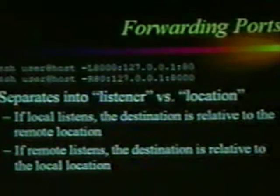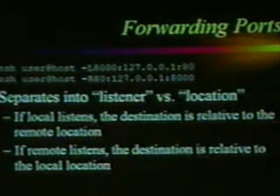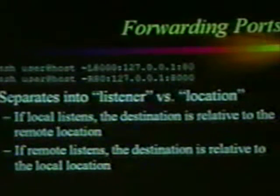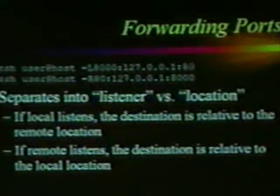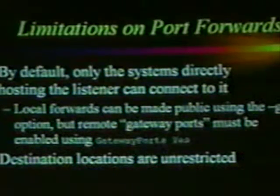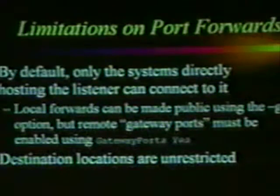Forwarding ports — a lot of people get really confused about port forwarding. SSH user@host -L 8000 — local forward, listen on local port 8000 to what the other side sees as localhost port 80. You can separate the syntax into listener versus location: whatever comes first is the listener. If new connections come from my side, it's a local port forward; if new connections happen on the other side, it's a remote port forward. By default, only systems directly hosting the listener can connect to it, so nobody can use you as a bounce point.